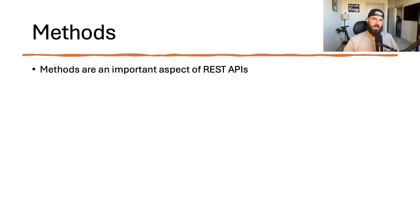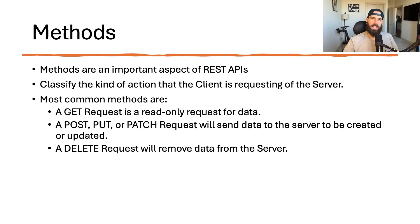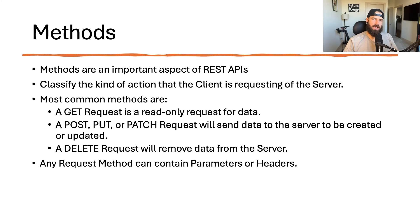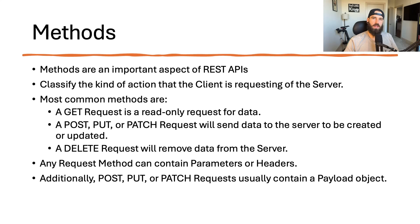Choosing the correct method when making a request is imperative. The same endpoint can have very different requirements depending on the method. GET is used to fetch data without modifying any resources — for example, retrieving a list of users. POST is used to create new resources, such as adding a user to the database. PUT is used to update an entire resource, like updating all of a user's details. PATCH is used for updating a partial piece of a resource, for example changing just a user's email address. DELETE is used to delete a resource entirely. POST, PUT, and PATCH methods usually also include a payload object containing information about what is to be created or updated.